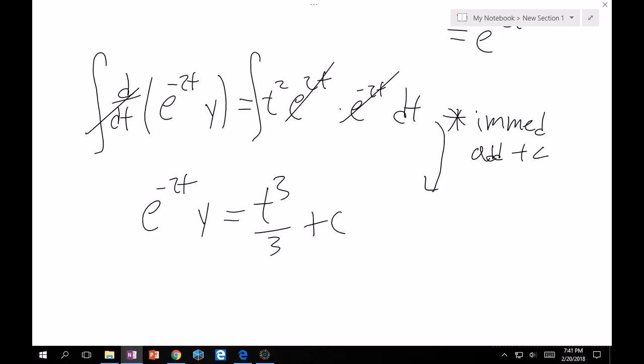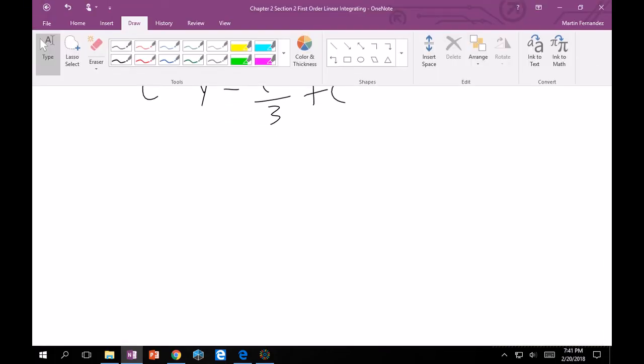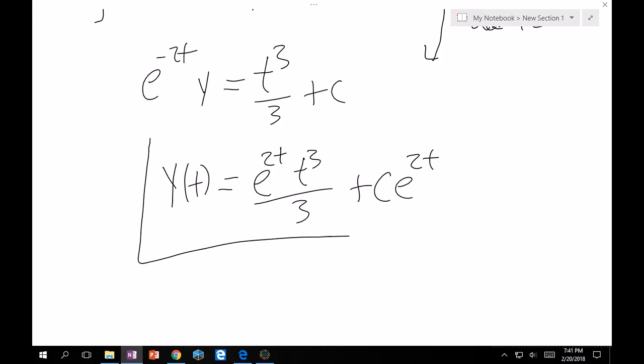And then from here, in order to get y, you just divide by e to the minus 2t. So, this is y(t) is going to be equal to e to the 2t t cubed over 3 plus C e to the 2t. And this is your final answer.